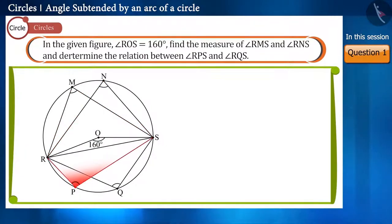Friends, observe the figure carefully. Here the angle ROS is the angle subtended by the arc RS to the center O, and both the angles RMS and RNS are angles subtended by RS to points M and N respectively in the remainder of the circle.